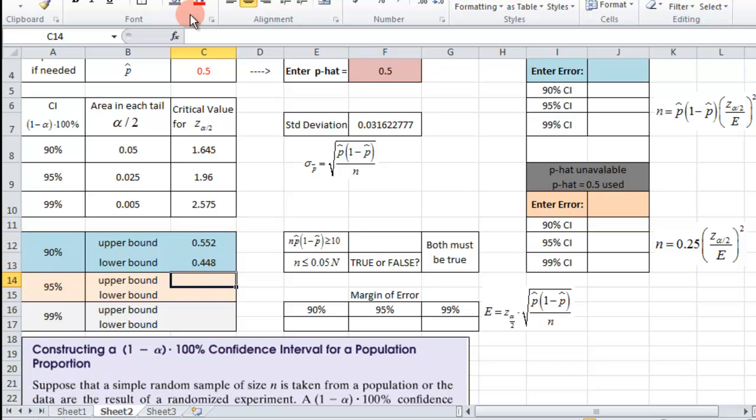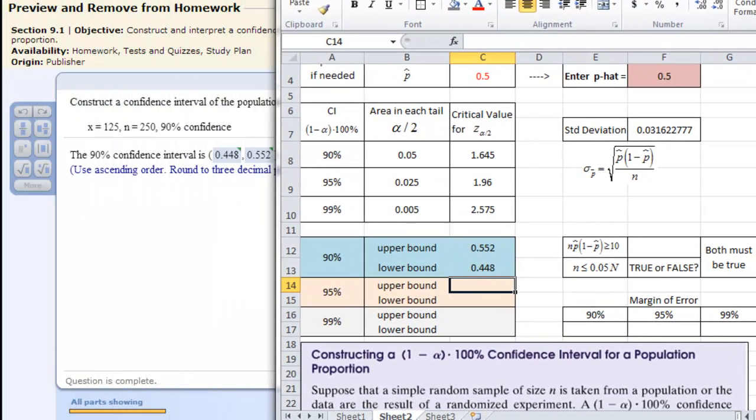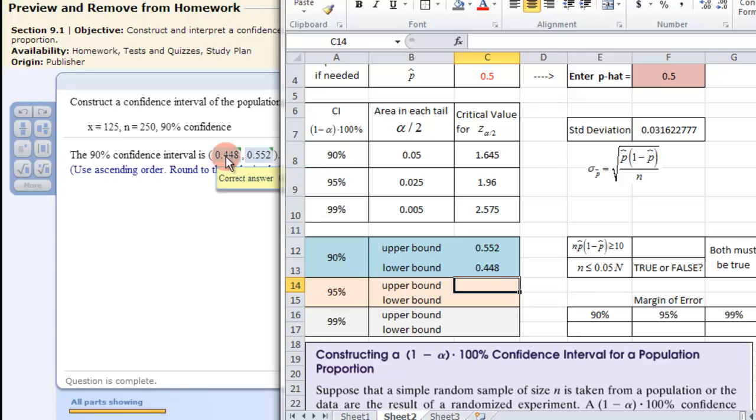And then that gives us our confidence interval 0.552, 0.448. I have it rounding off. So let's check that to make sure we're right. 0.448. Make sure you put them in the right order, right? Upper bound goes second, lower bound first because it's an interval. So the first one and second one.